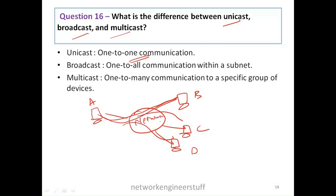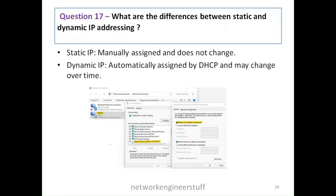Multicast is when a message is sent to a specific group. Let's say C and D belong to a group, and A is sending messages to that group consisting of C and D — that is multicast. So unicast is one-to-one, broadcast is one-to-all, and multicast is one-to-many communication to a specific group of devices.